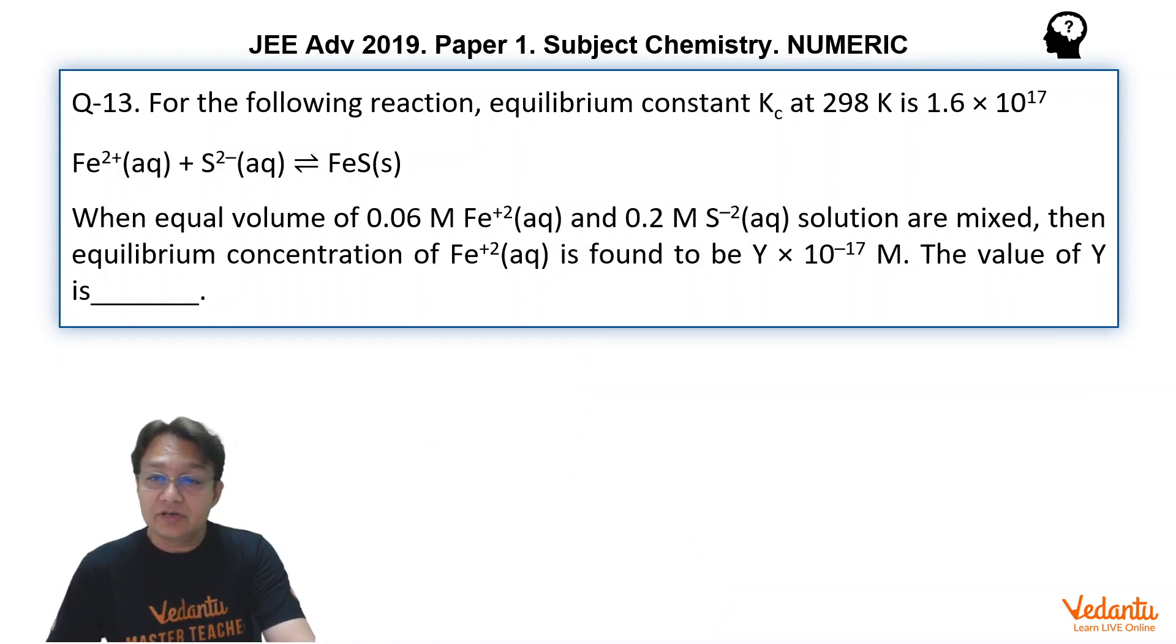For the following reaction, equilibrium constant Kc at 298 Kelvin is 1.6 × 10^17. The reaction is between Fe²⁺ and S²⁻ ion forming FeS.